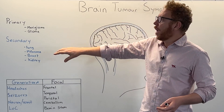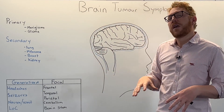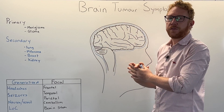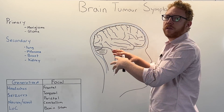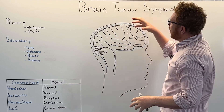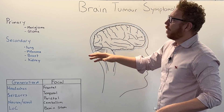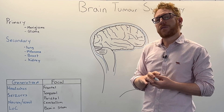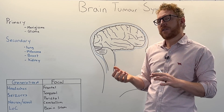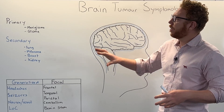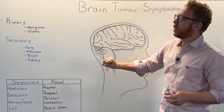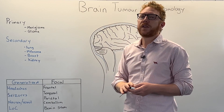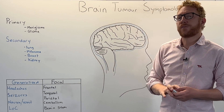The most common subtypes of primary brain tumours are meningiomas and gliomas. Meningiomas come from the meninges - the wrapping around the central nervous system - and usually migrate inwards. Gliomas come from the supportive cells of neurons, such as astrocytes and oligodendrocytes, and are found within the brain itself. These two types make up over two-thirds of all primary brain tumours.